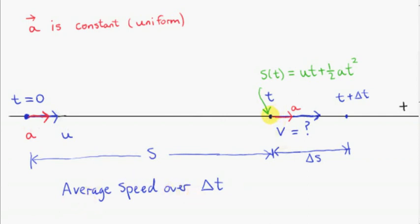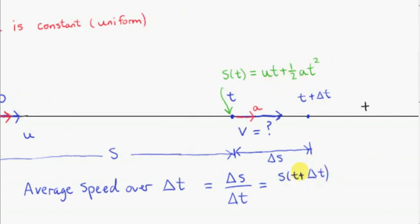We start by talking about the average speed of the particle over the time interval delta t, as it travels over distance delta s. We get the distance travelled, delta s, and divide by the time taken, delta t. This is only an average because if we make delta t smaller and smaller, the second position approaches the first. We can keep making it smaller until it virtually coincides with this point, and then the average speed over delta t will become the instantaneous speed at time t.